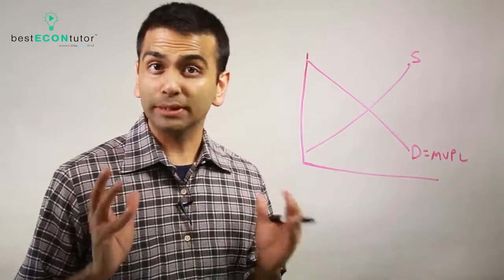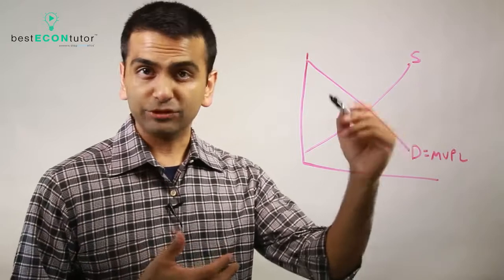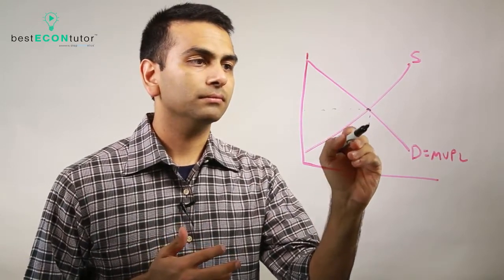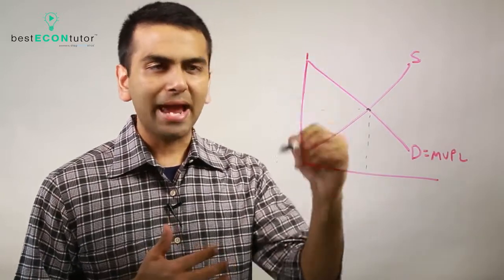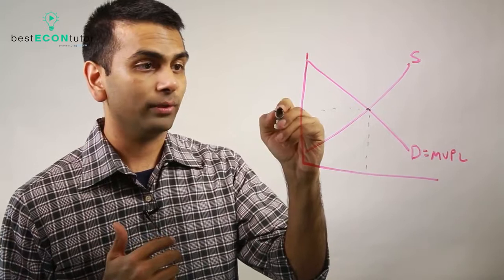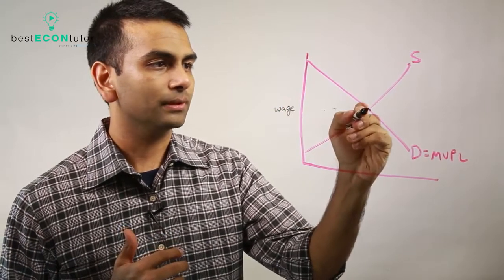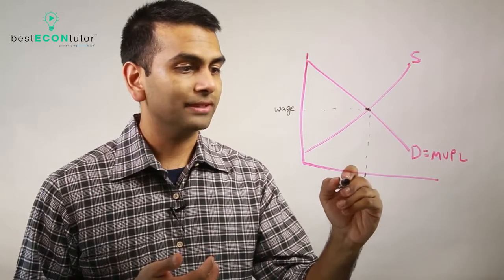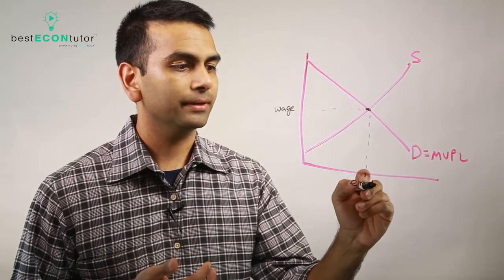And finally, let's look at the equilibrium, where labor supply and labor demand meet. Now, again, the y-axis here, the price of labor, there's a specialized name for that: wage. So that's the equilibrium wage that everyone's going to get, and that's the quantity of hours worked. You can even call that employment level if you want.